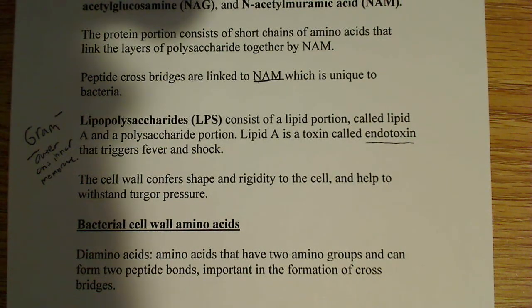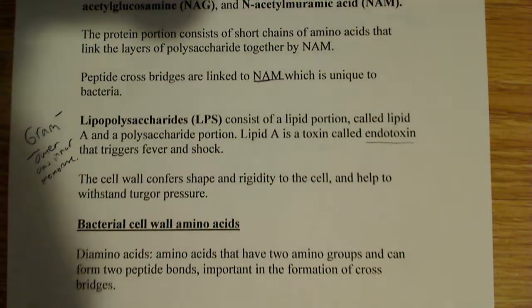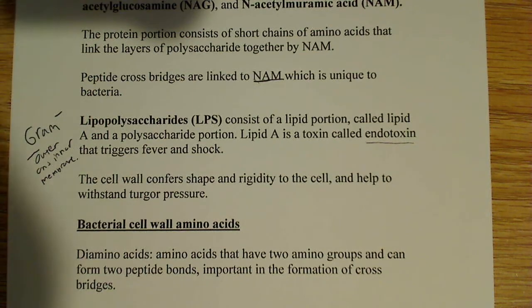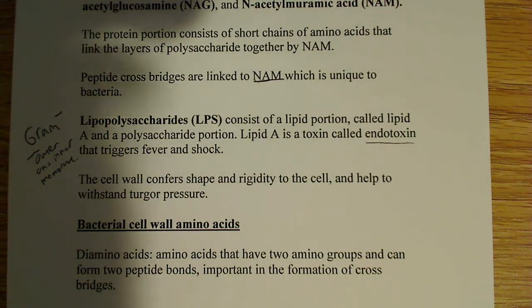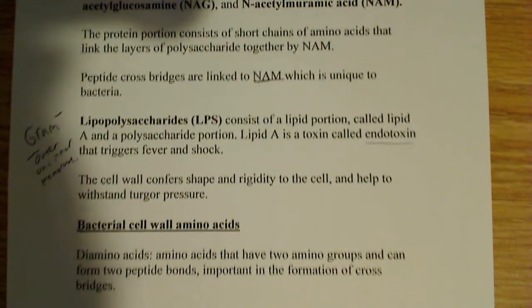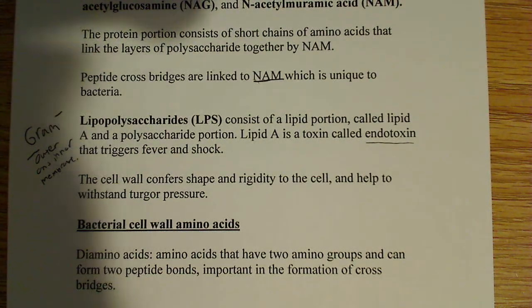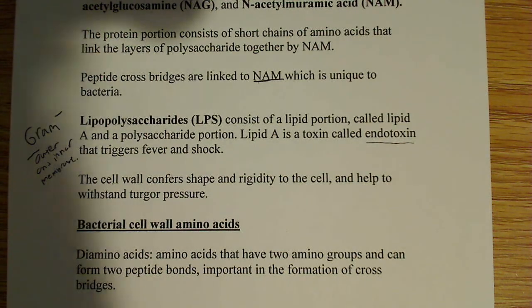The cell wall confers shape and rigidity to the cell and helps it withstand turgor pressure, similar to plants — plants also develop turgor pressure when water enters. The cell wall is protective and very strong, due in part to its beta-1,3 glycosidic linkages.